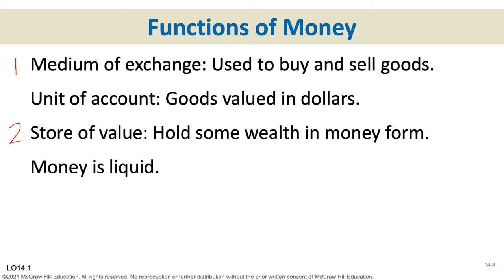But some of your money might be saved in order to use later, and that's what store of value is. For something to be used as money, it has to be acceptable right now to go to the grocery store, but it also has to be acceptable later — it has to hold its value. For example, gold was used as money because you could weigh it out and buy what you wanted, but you could also store it away and use it later.